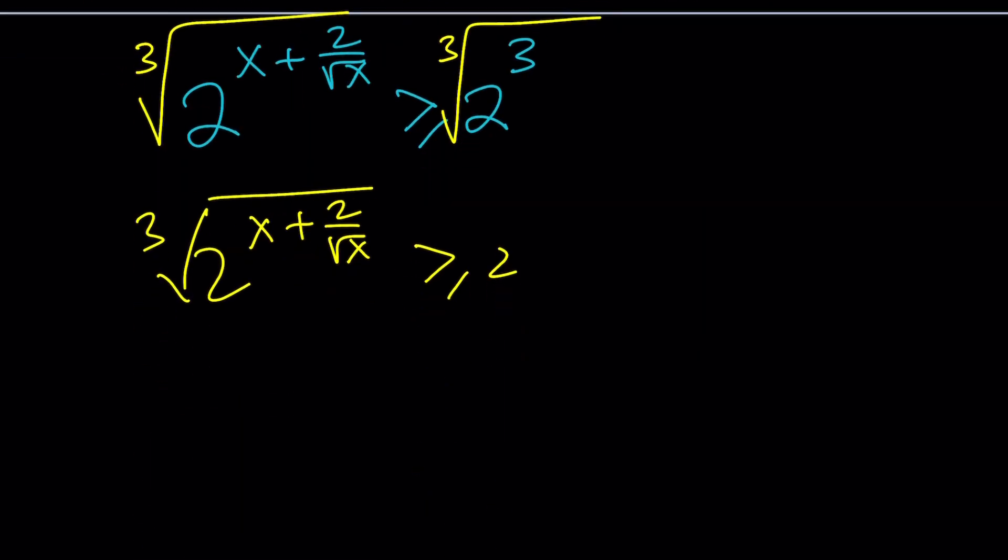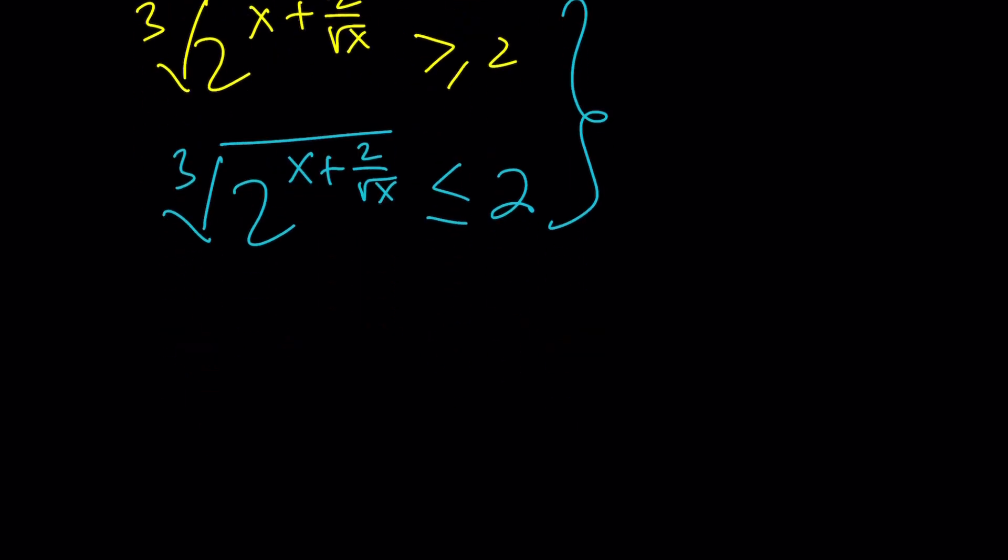So, now I have this and I have this. The cube root of 2 to the power of x plus 2 over square root of x is less than or equal to 2. What does this mean? Isn't that contradictory or aren't they contradictory? No, this is not a contradiction. This just means that the radical expression is equal to 2. That's the only way they're going to intersect.